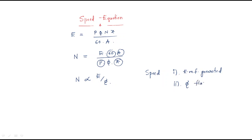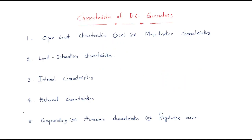So when you know the EMF equation, the speed equation follows easily: speed is proportional to EMF and inversely proportional to flux. Based on this relationship, we can also control the speed.